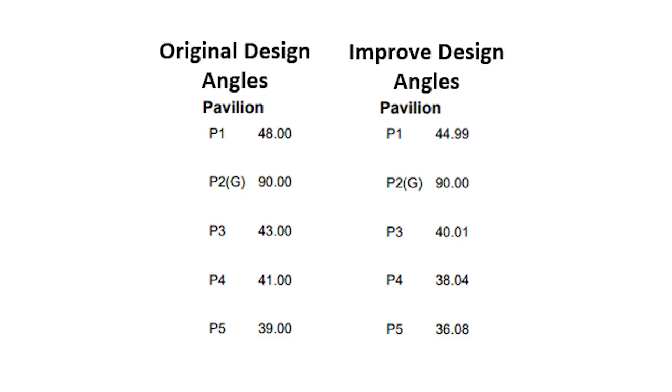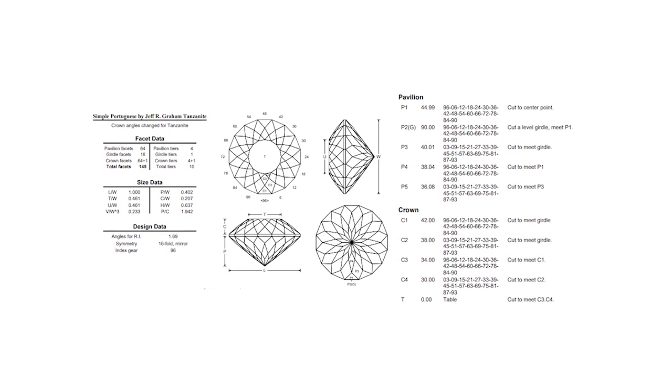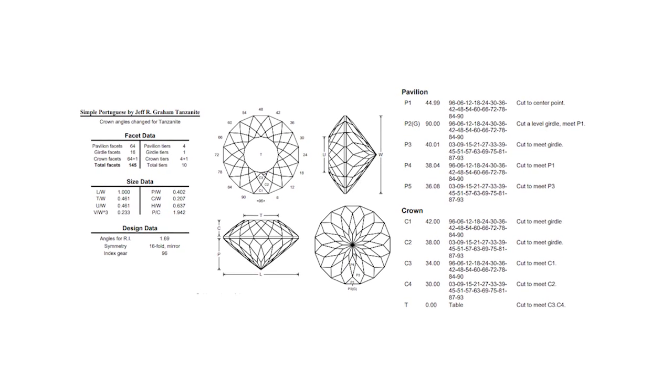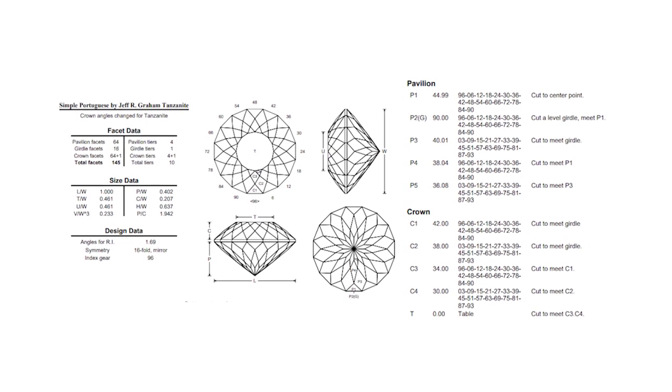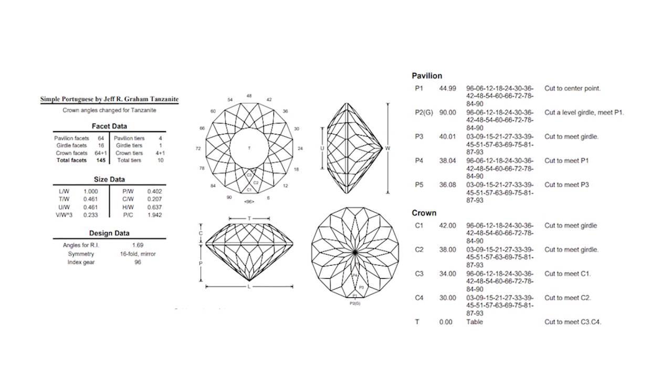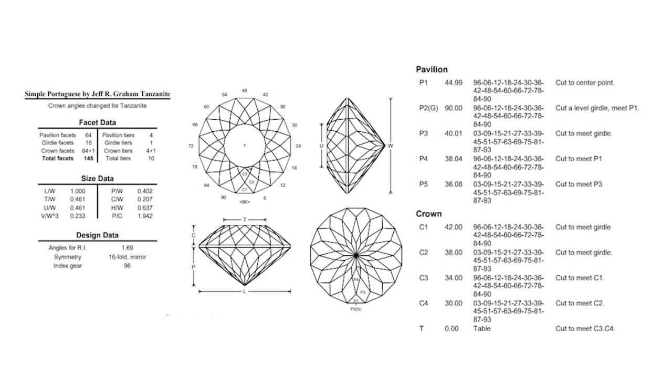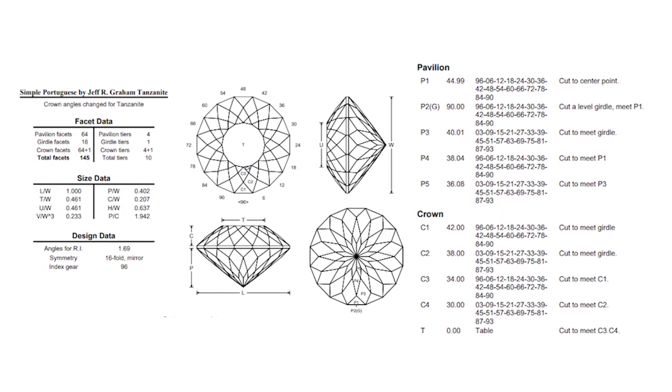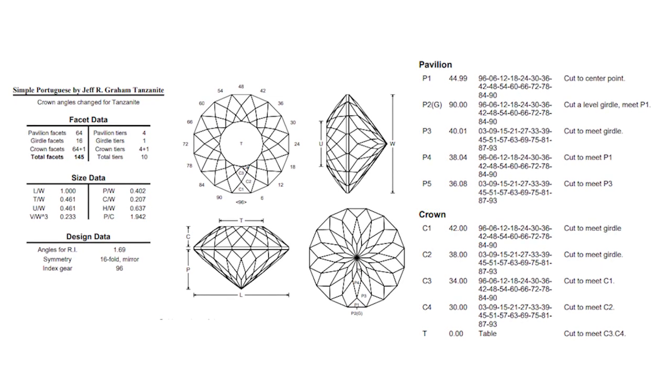After making the tweak to the angles to improve the performance, the pavilion angles change slightly. We're just changing the angles on the pavilion by about 3%. Not much of a tweak, but it gives us a much improved performance. No adjustments are being made to the crown angles. Now we're ready to start cutting. Let's see how the final gemstone turns out.